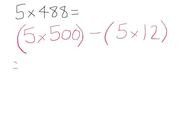So now 5 times 500 is very easy to work out, that's 2500, and we're taking away 5 times 12, which is 60. So our answer is 2440.